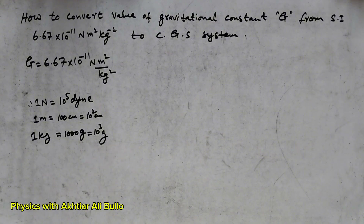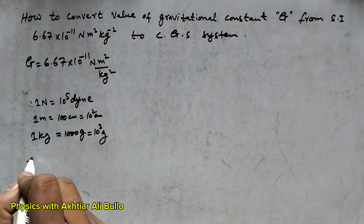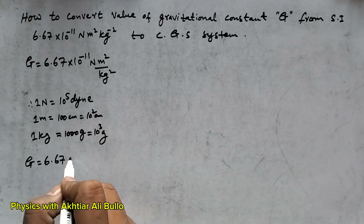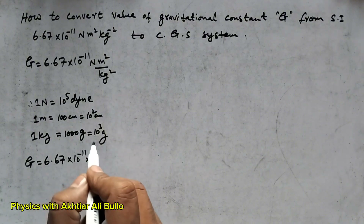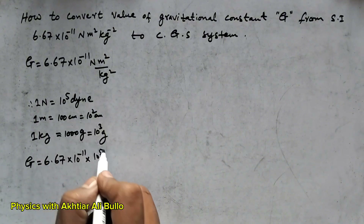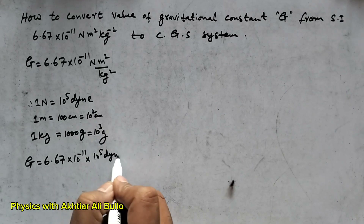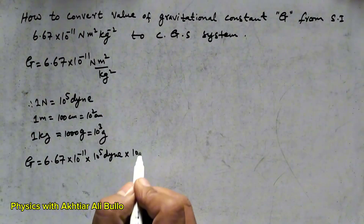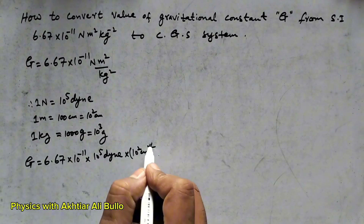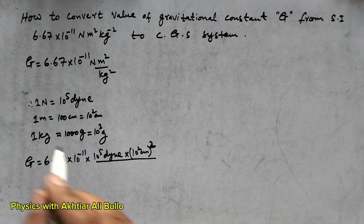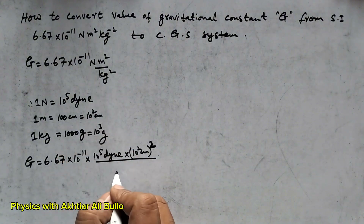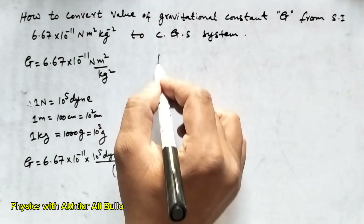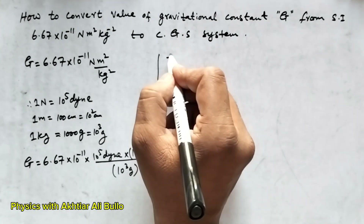By putting these values, the value of the gravitational constant will be 6.67 × 10⁻¹¹, where 1 Newton is replaced by 10⁵ dyne, 1 meter squared becomes (10² centimeter) squared, and 1 kilogram squared becomes (10³ gram) squared.